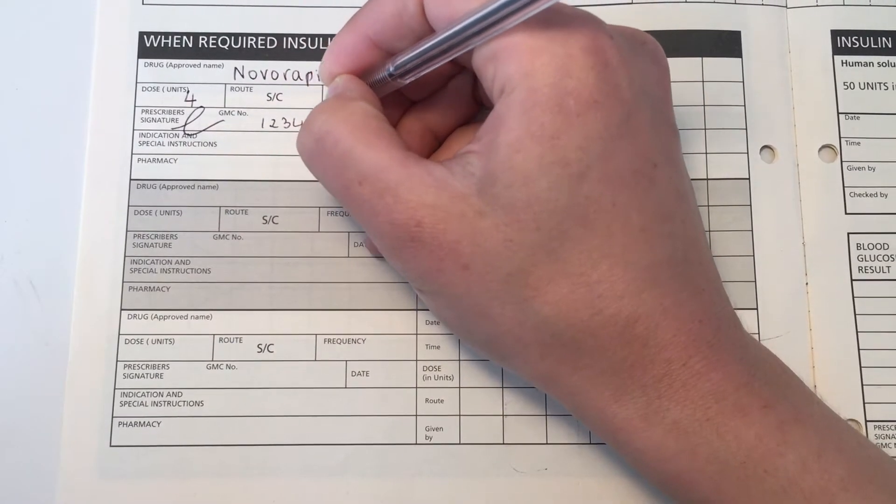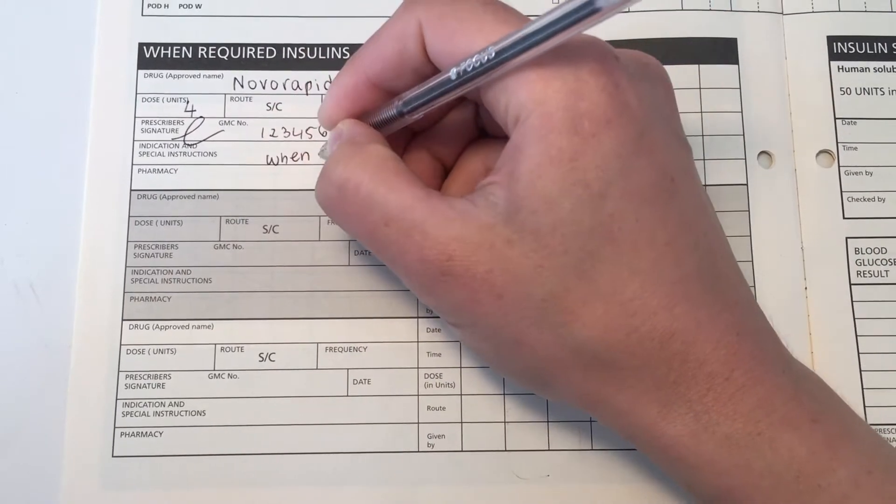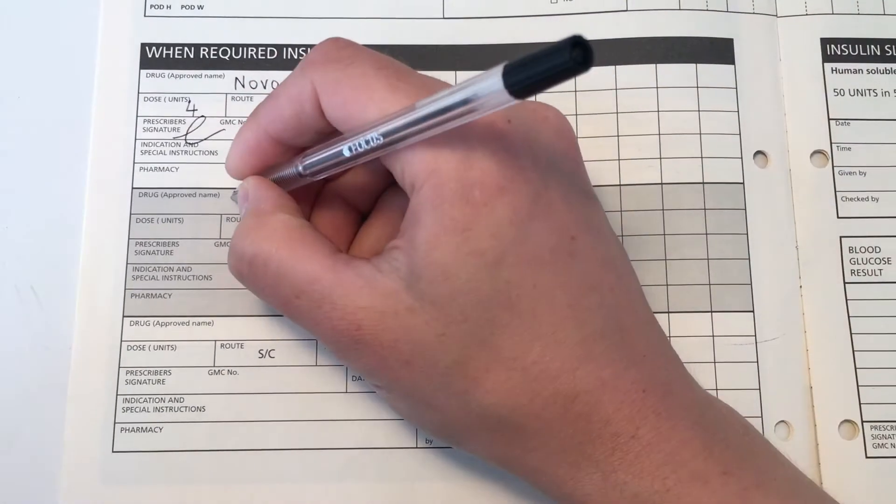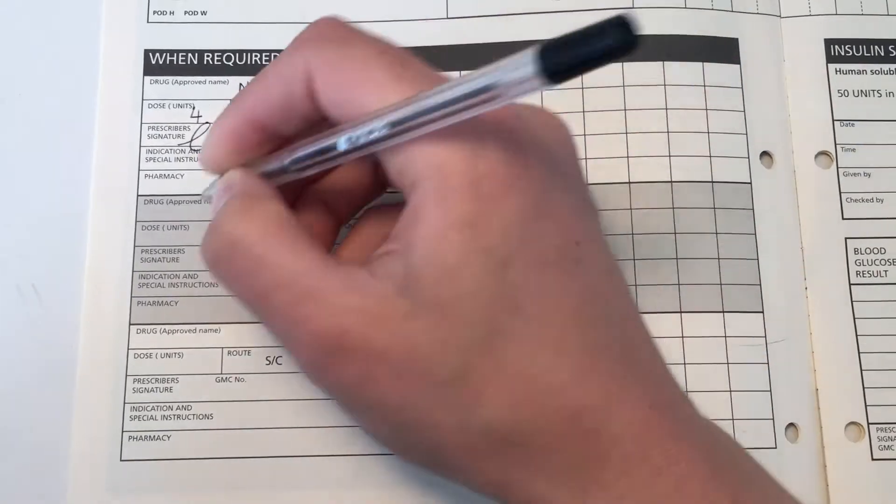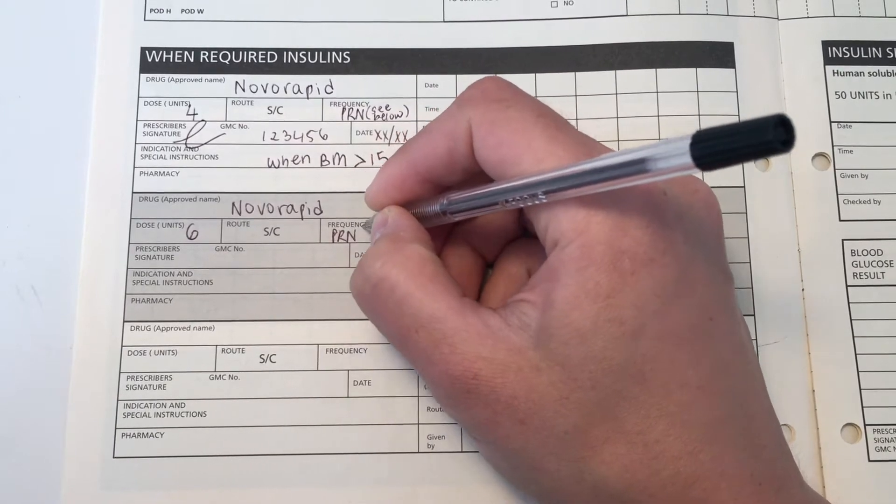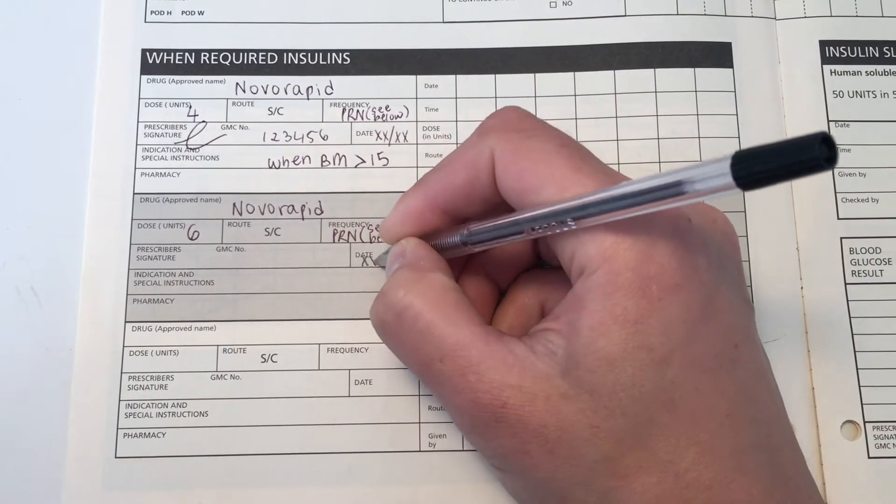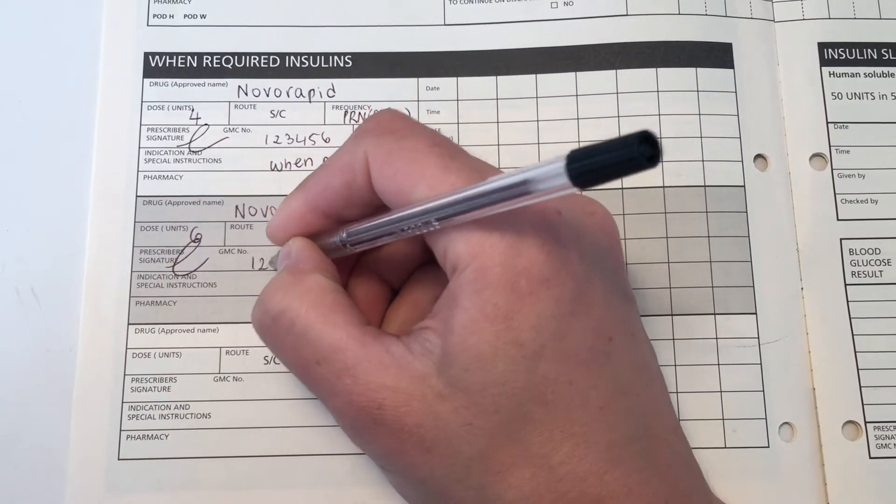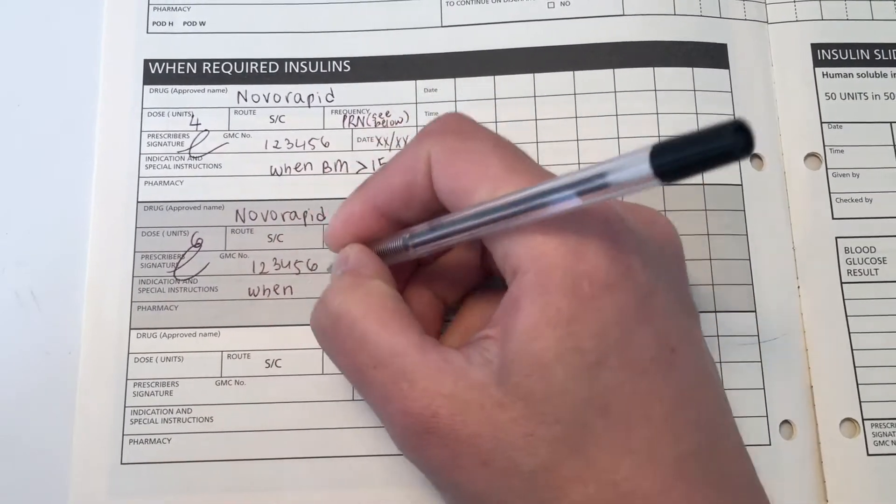Always check your trust guidelines because they might differ slightly, but this is generally what you'll see prescribed. So there's two doses you would write up. Four units of Novorapid would be given if the BMs are over 15, and six units of Novorapid would be given if the BMs are over 20. I've written it out in two boxes to make it simpler to see, but sometimes you'll see people writing it up in one section and just writing in the instructions four units if BMs over 15 and six units if BMs over 20. The method of administration is pre-filled to subcut and I've put PRN with the instructions below. So that's going to be the most common thing you prescribe in the insulin section.